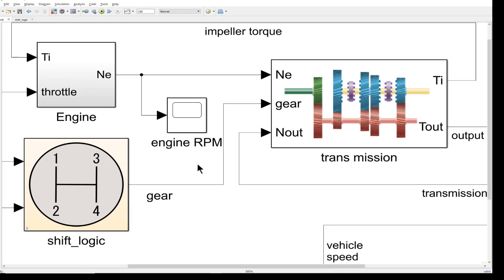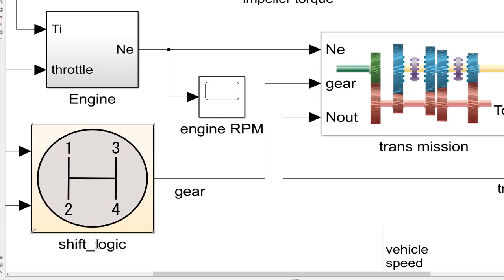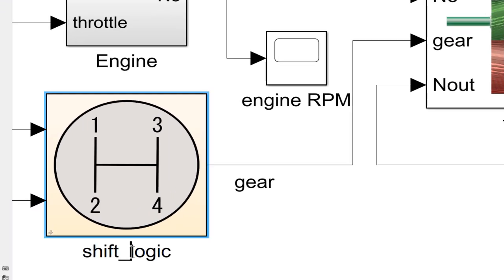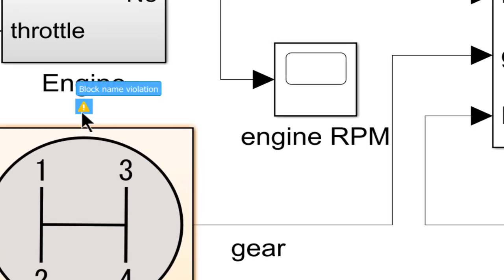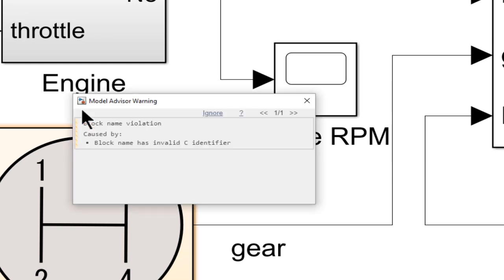In this example, a space is added into the name of this block. The block is highlighted and an error is indicated. Hovering on the error tells you that the name of the subsystem is incorrect. Clicking provides more information that the name needs to be a valid C identifier.